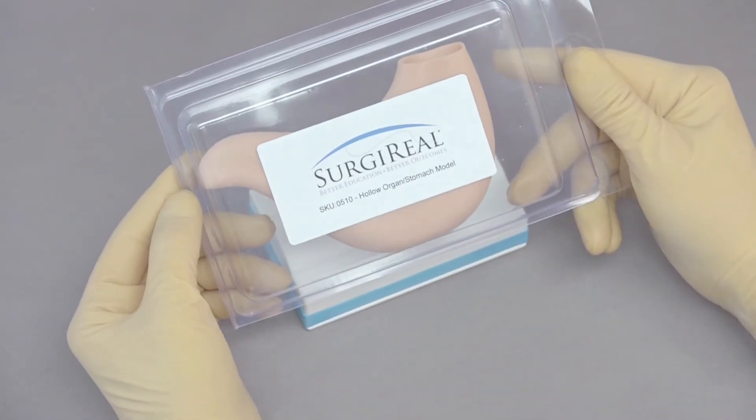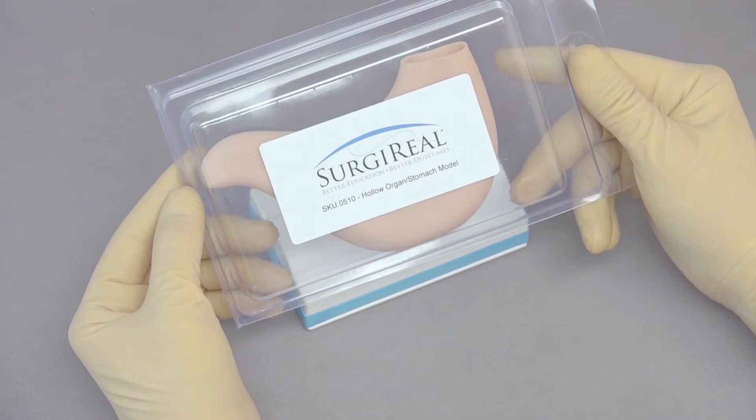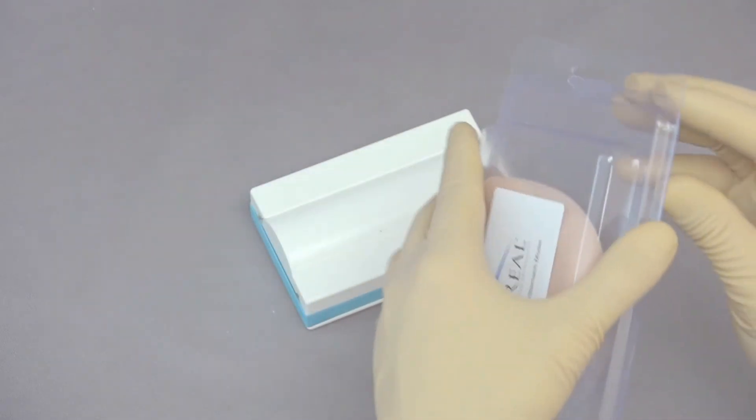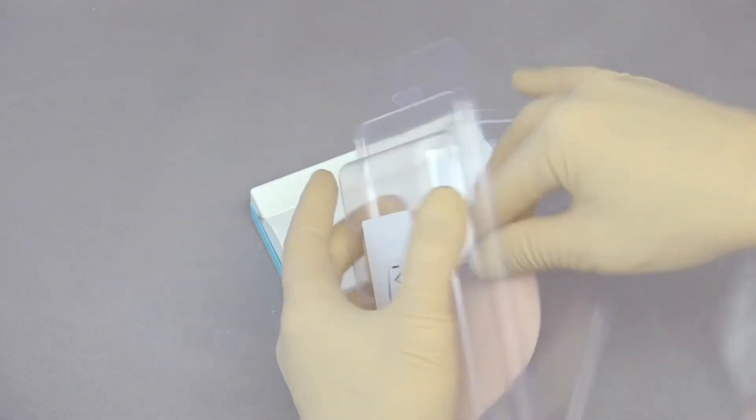We're going to suture the Surgery Real hollow organ stomach model. This represents the stomach of probably a medium to small breed dog.